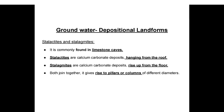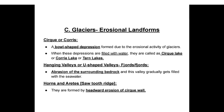Groundwater depositional landforms: stalactites and stalagmites are commonly found in limestone caves. Stalactites are calcium carbonate deposits hanging from the roof; stalagmites are calcium carbonate deposits rising up from the floor. When both join together they give rise to pillars or columns of different diameters. Glaciers erosional landforms: cirque or quarries are bowl-shaped depressions formed due to erosional activity of glaciers; when these depressions are filled with water they are called cirque lakes, quarry lakes, or tarn lakes.